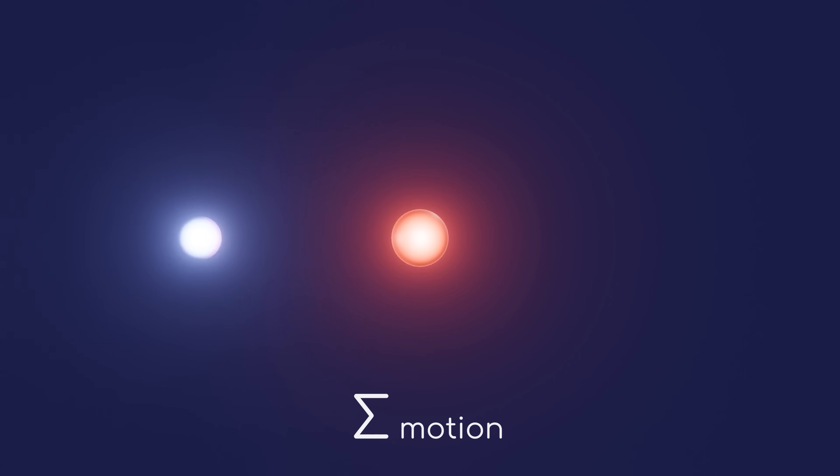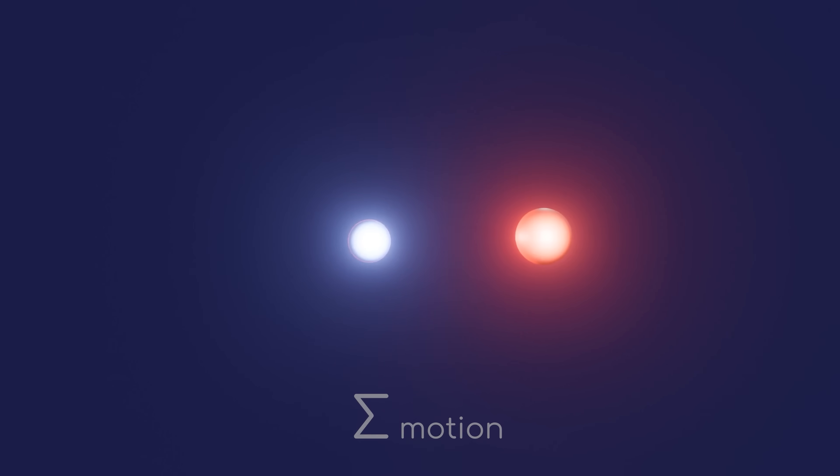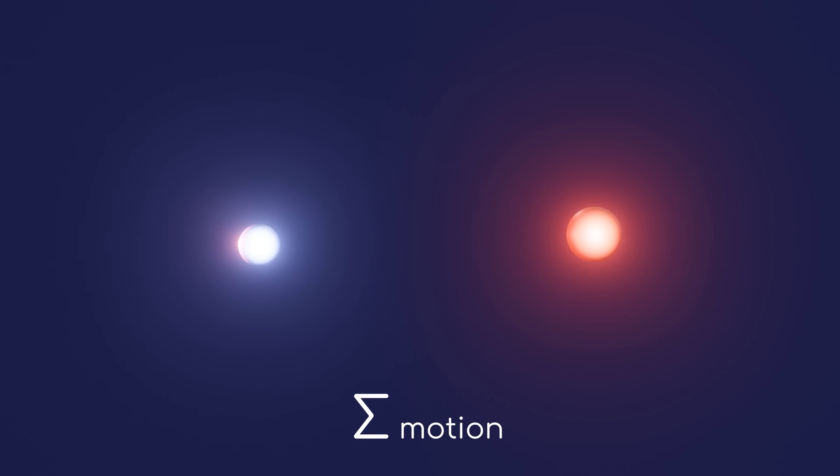If one particle with momentum bumps into a particle that is standing still, and both bounce away from each other, the amount of total motion for the two particles must equal the amount of the first particle on its own. No momentum can be lost.